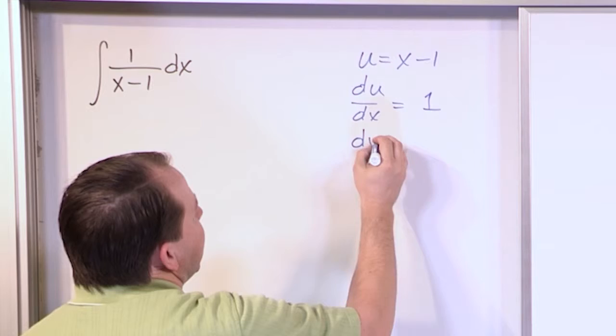du with respect to x is just 1 because the derivative of that's just 1. dx will then equal du.